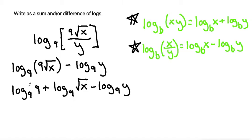From here, I can use a formula that if you have log base b of b, so if your base is the same thing as the number inside the log, that is equal to one. So using that formula, I can write log base nine of nine just as one. So one plus log base nine of square root x minus log base nine of y.